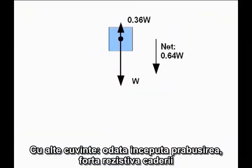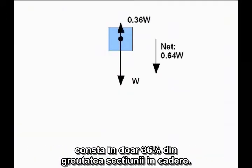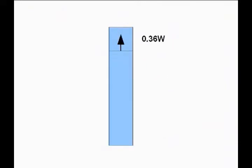In other words, once it starts falling, the upward resistive force is only 36% of the weight of the falling section of the building. So far, so good.